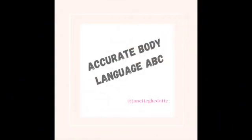So when you're interacting with others in business and in your personal life, notice the accurate body language ABCs. A — the antecedent question or stimulus statement. B — within five seconds, notice the person's behaviors. What are they showing in their body language? And C — start clustering the clues. From head to toes, the body always shows the truth.